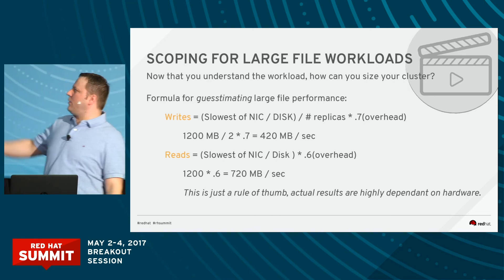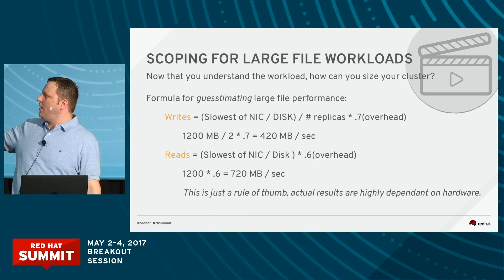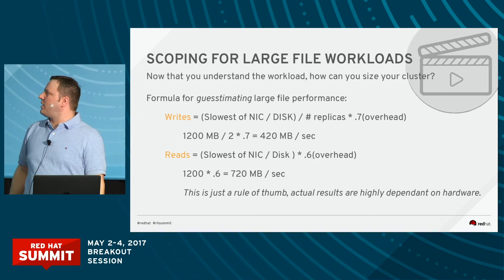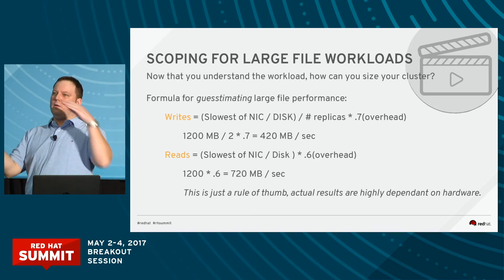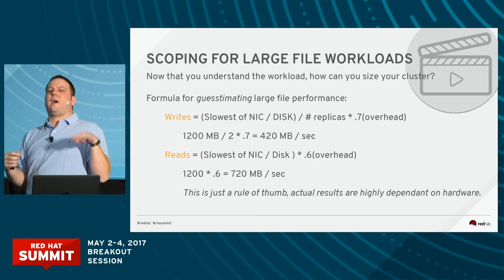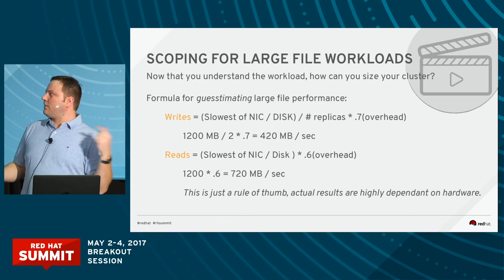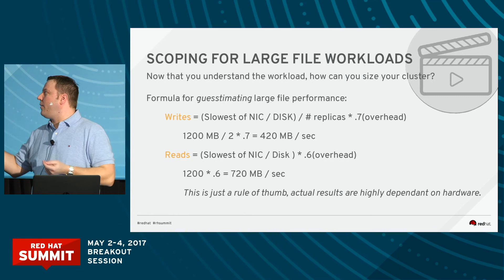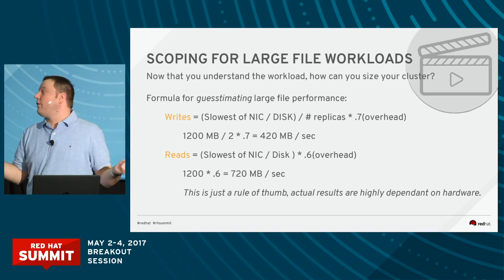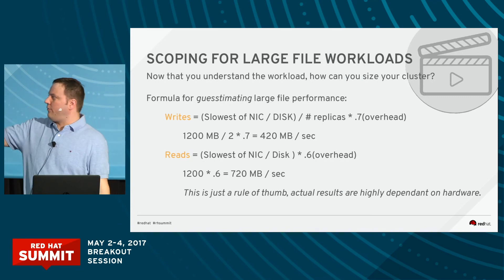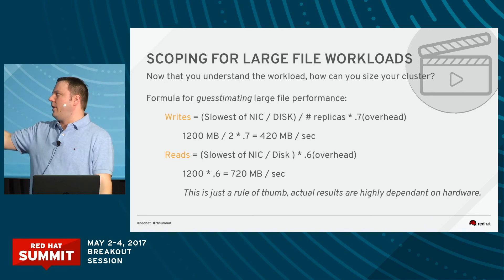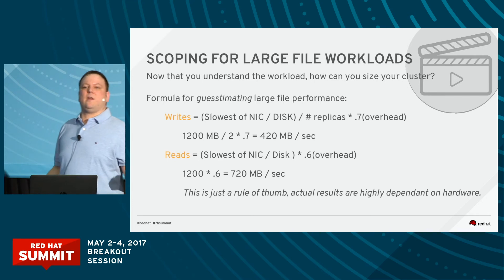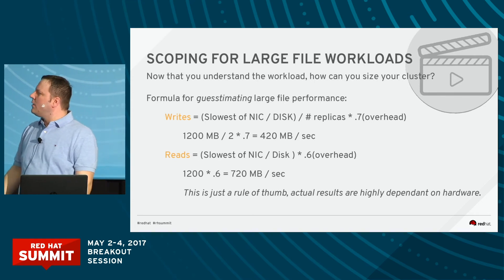This is a quick formula I use to guesstimate performance and how many nodes I'm going to need. Since we're using replication, and replication is done client-side on writes, we take the slowest of your — your cluster is only as fast as the slowest piece. Usually it's network or disk. We divide it by the number of replicas and multiply it by 0.7 — so that's about 30% overhead on writes. If we do the formula that goes back to 420, multiply 420 by 4, it comes out to about 1,600 — it jives. These numbers come out really consistent.